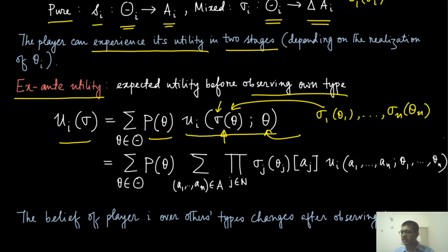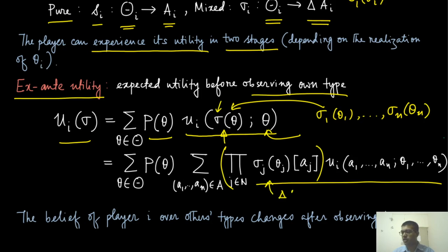To expand this out in more explicit terms: this term is the result of the randomization over delta of A_i. For each player, a number is picked from A_i and then delta of A_i, and you take the product over all players in N and then sum over all possible pure strategies. This is the expansion of the mixed strategies.